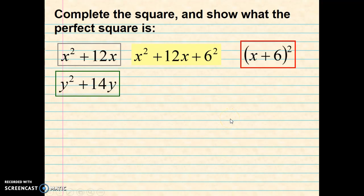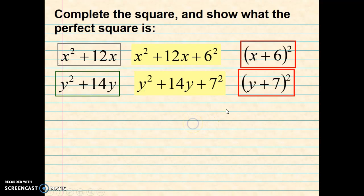Next let's look at y squared plus 14y. Half of B would be 7 and we're going to square that and add it. So that's going to give us y squared plus 14y plus 7 squared. So what do you think the binomial factor on this one would look like? Well, if you said y plus 7 squared, you'd be correct. Notice that the 7 is half of the B term and the plus sign follows the B term.